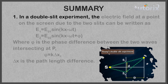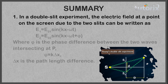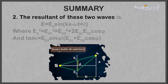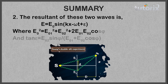In a double slit experiment, the electric field at a point on the screen due to the two slits can be written as E1 = E01 sin(kx − ωt) and E2 = E02 sin(kx − ωt + φ), where φ is the phase difference between the two waves intersecting at P, and φ = k·delta x, where delta x is the path length difference. The resultant is E = E0 sin(kx − ωt + ε), where E0² = E01² + E02² + 2·E01·E02·cos φ, and tan ε = E02 sin φ / (E01 + E02 cos φ).